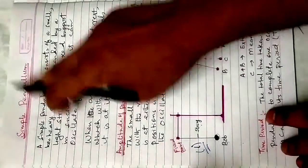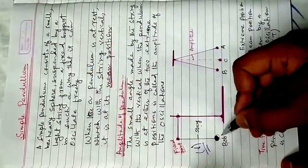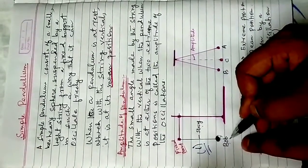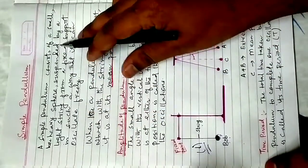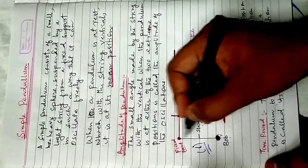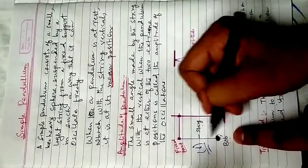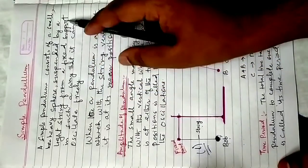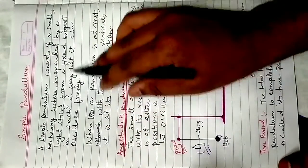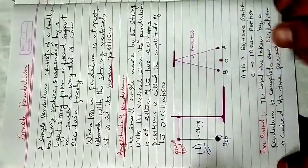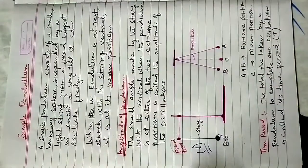Now look at the definition of the simple pendulum. A simple pendulum consists of a small heavy sphere suspended by a light string from a fixed support, such a way that it can oscillate freely. This is the definition of the simple pendulum.